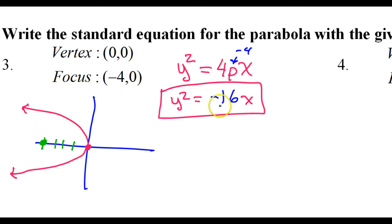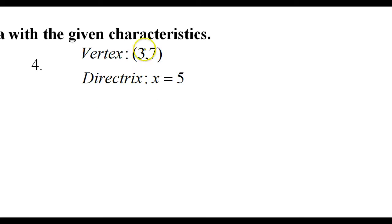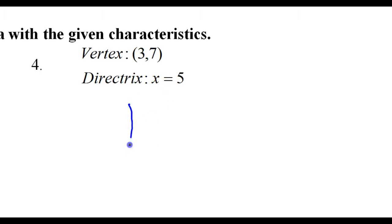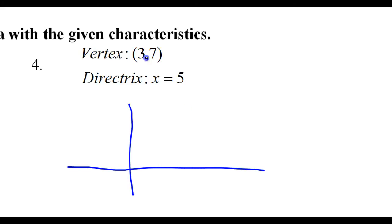So if I put in negative 4, that's going to make this become negative 16. So that's why y² = -16x. And it makes sense that it would be negative because it's going to the left. Alright, number 4 — we're given the vertex and the directrix. Again, let's draw a quick sketch. The vertex is at (3, 7).